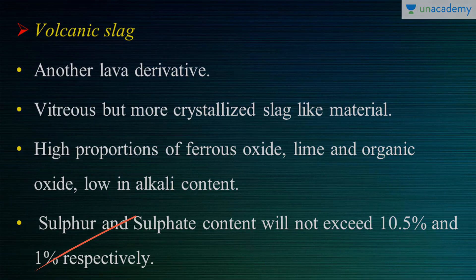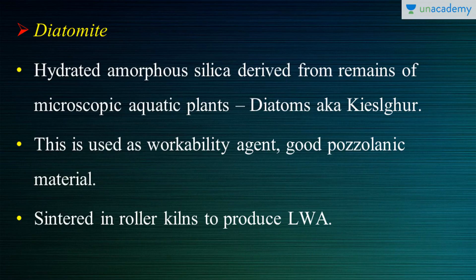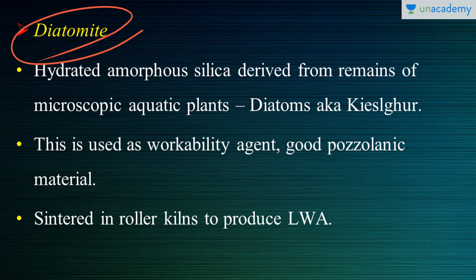Now let's move on to diatomite. These are hydrated amorphous silica — another derivative of silica in hydrated, amorphous form. They are from the remains of microscopic aquatic plants known as diatoms. The process of formation is something like how natural crude oil is formed — when plant fragments are deposited for many years, they decompose and form crude oil. Similarly, diatomite is derived from microscopic aquatic plants.